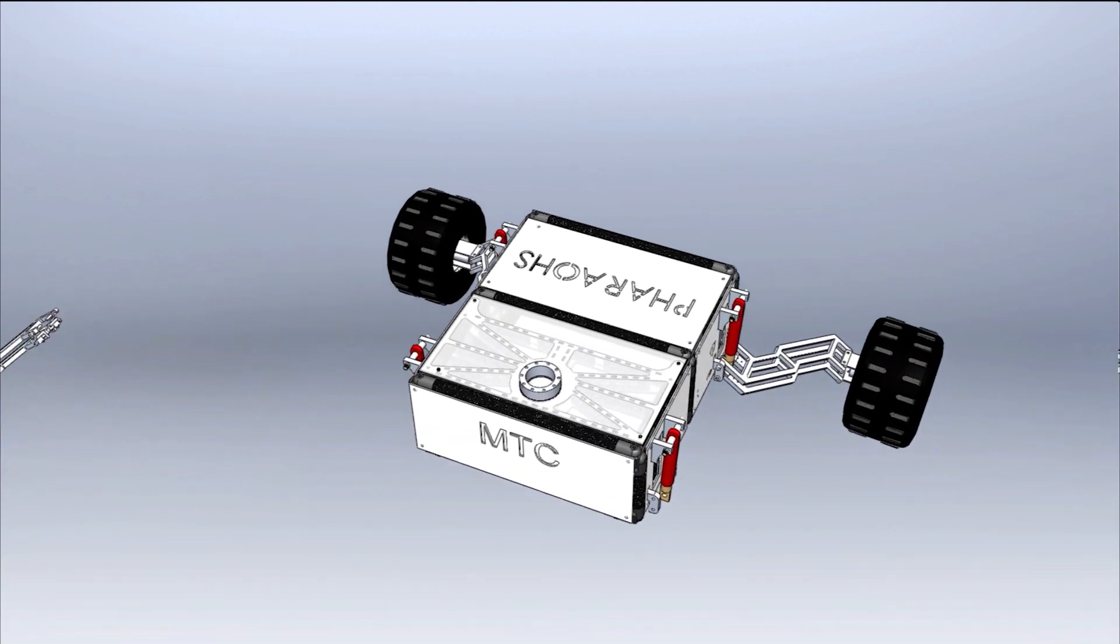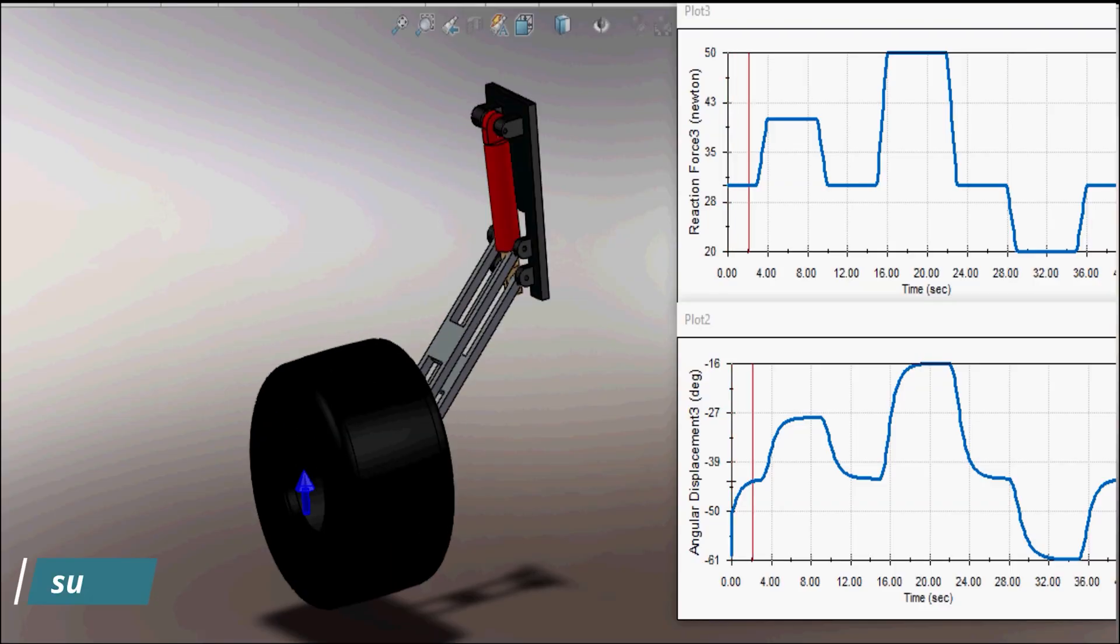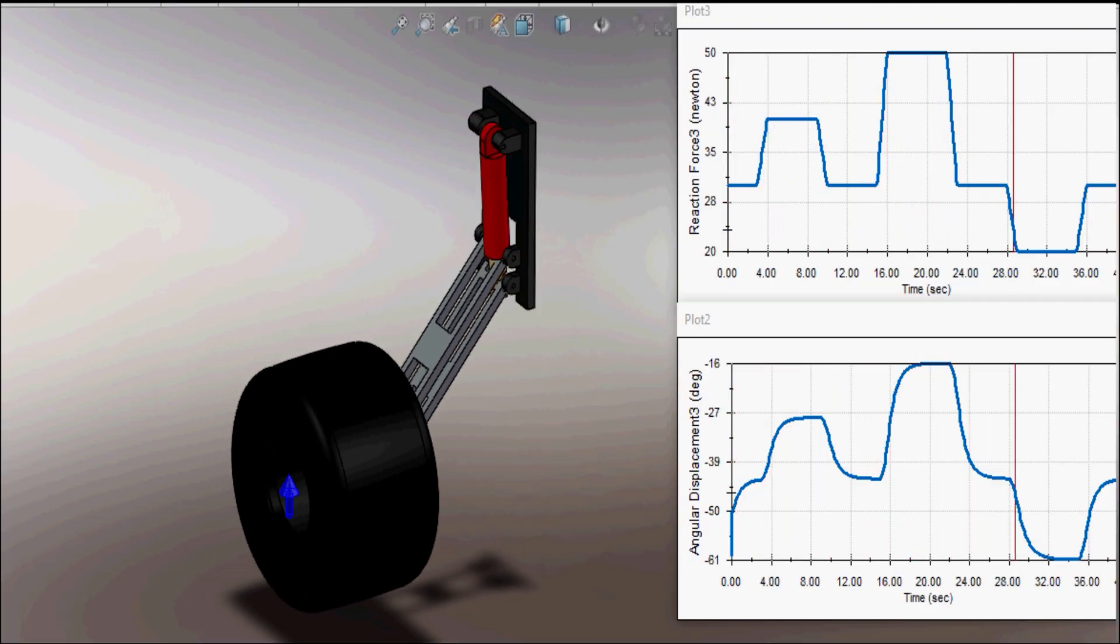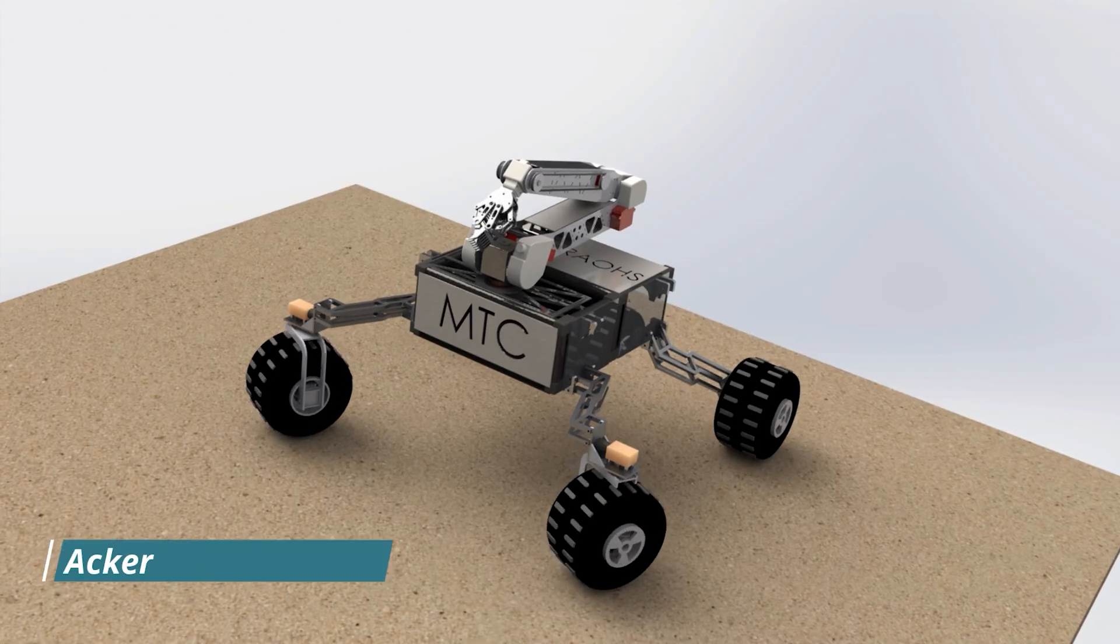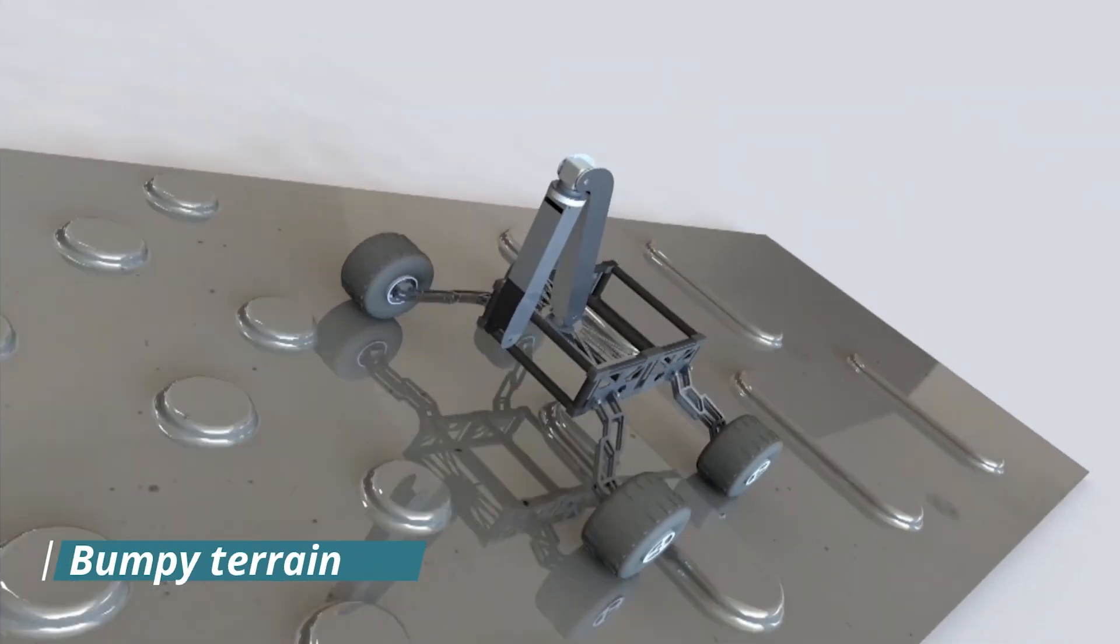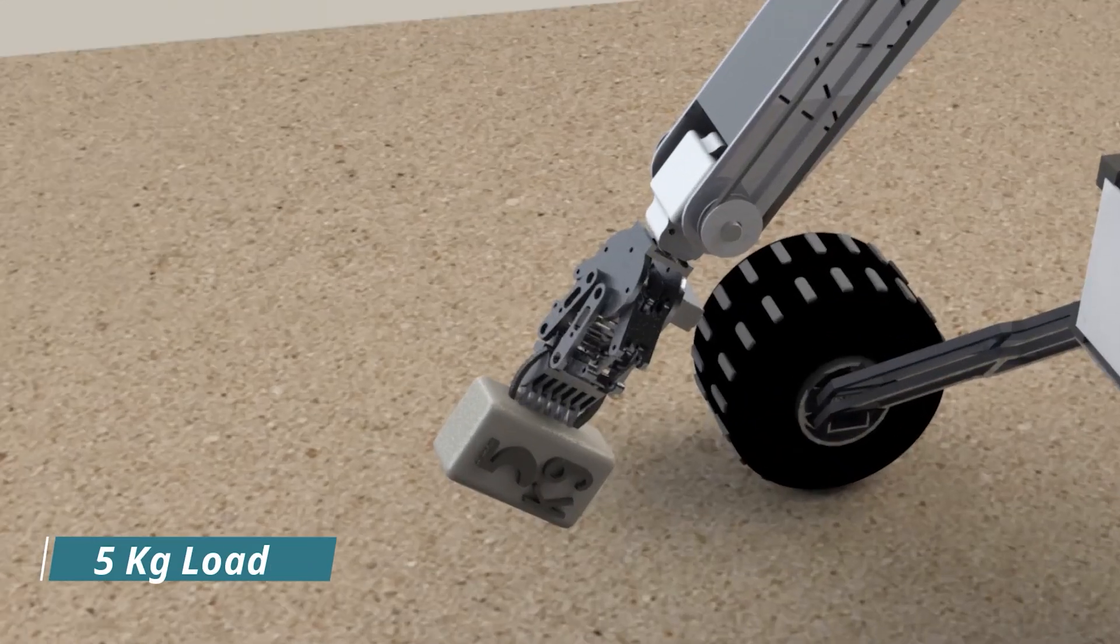The suspension system is calculated by doing a mathematical model for the system to calculate required stiffness and fixation of springs. Motion study is done on a new system to test its ability to traverse hard and inclined terrain and carry the required load.